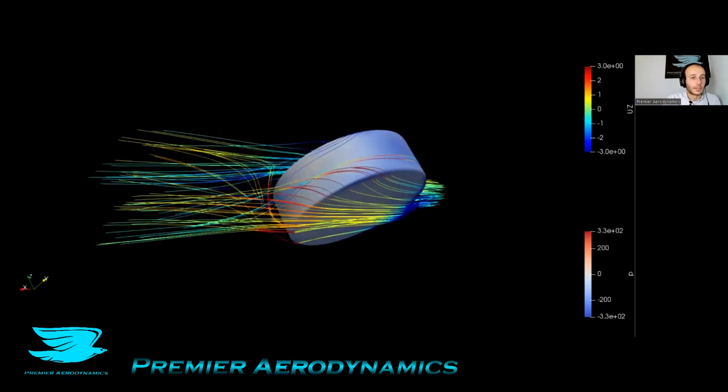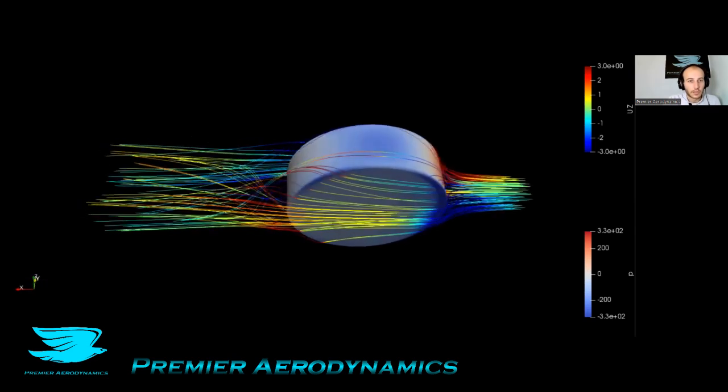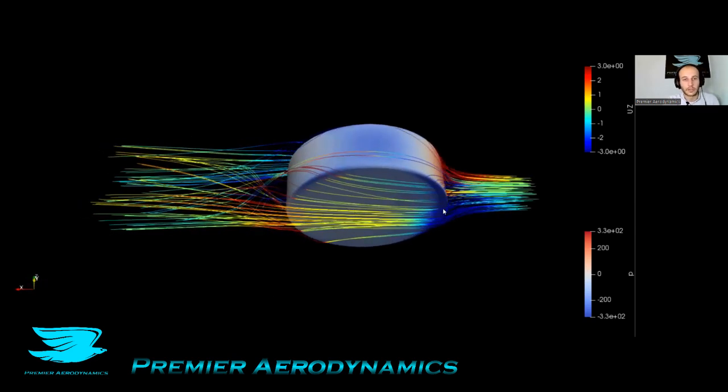For some reason there's this crossover of these streamlines and they're not just coming together at the back and going forward, it's this swirling motion. Another interesting feature is that from this angle you can see this is the bottom of the puck.